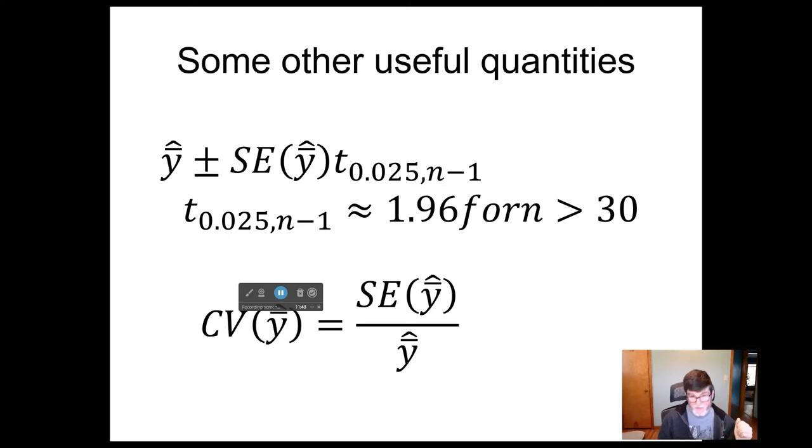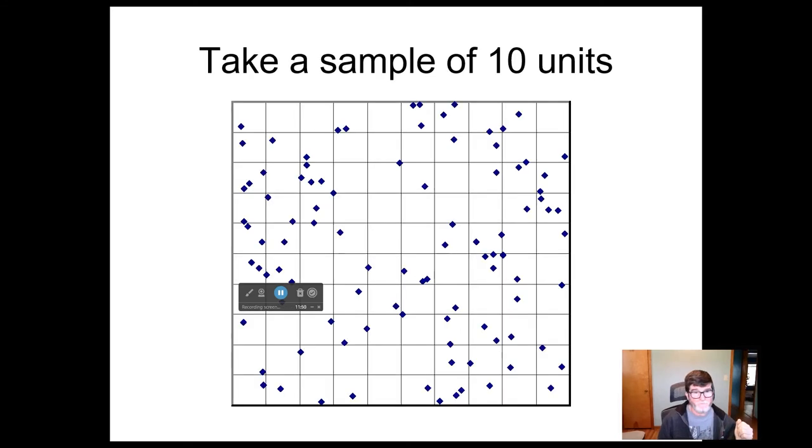So let's take a quick look at an example. Go back to our sample population here, and we're going to draw a sample of 10 units. Each of these squares is a unit, so we're going to draw 10 units out of here. And we're drawing them with replacement, which what that means is that when we select one, we go back and we select it. There's a possibility that it could be drawn a second time. And so if this was being done in reality, we wouldn't have to count that quadrat twice. We've already done it. We would just include the observation twice.